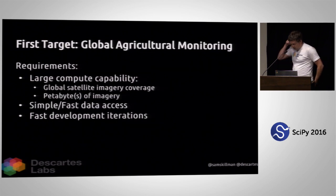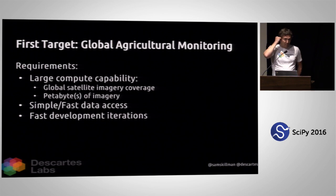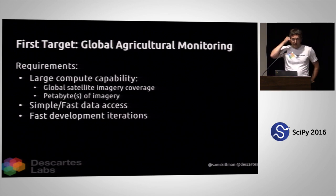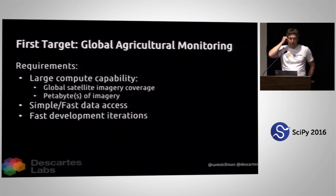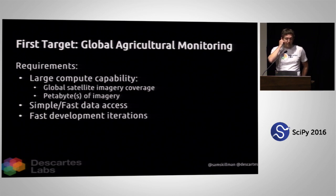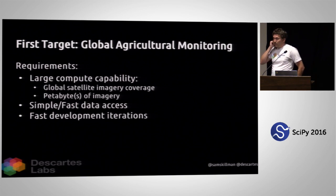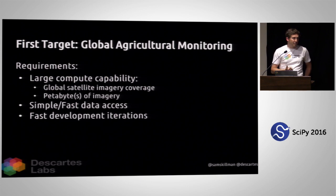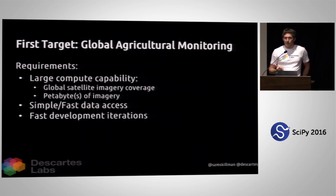To do that, there are a few things you might need if you're going to be processing a petabyte of pixels. One is large compute capacity. You're going to need global satellite imagery coverage — petabytes of imagery — and on top of that you want fast, simple data access to that satellite imagery, which will allow you to enable fast development iterations.